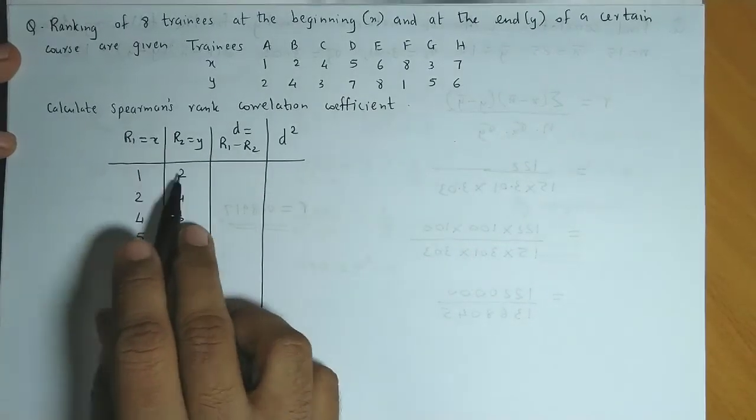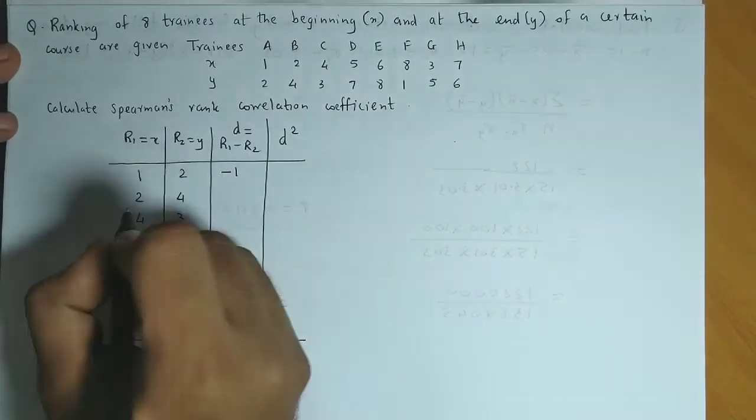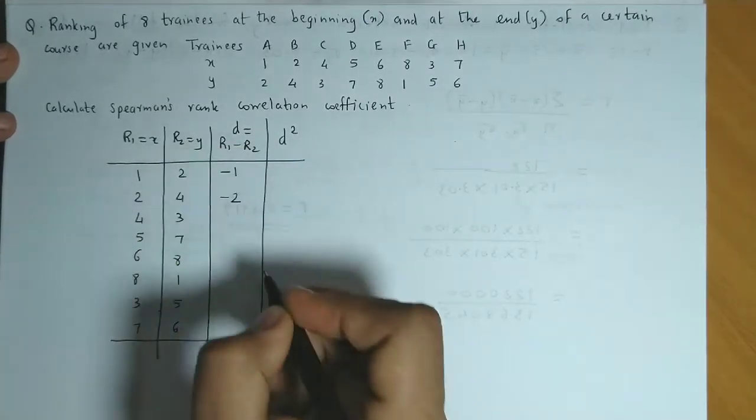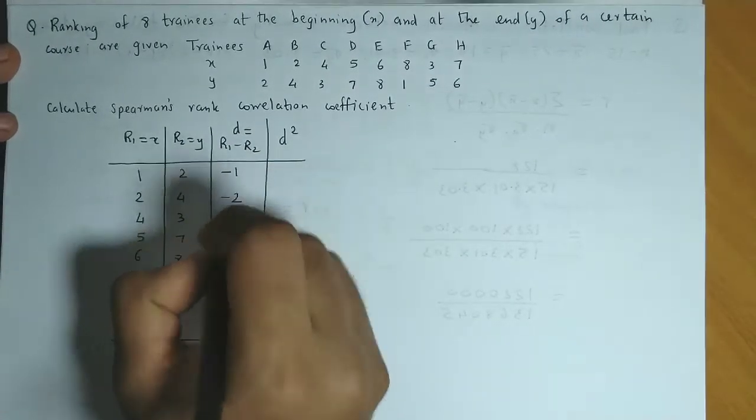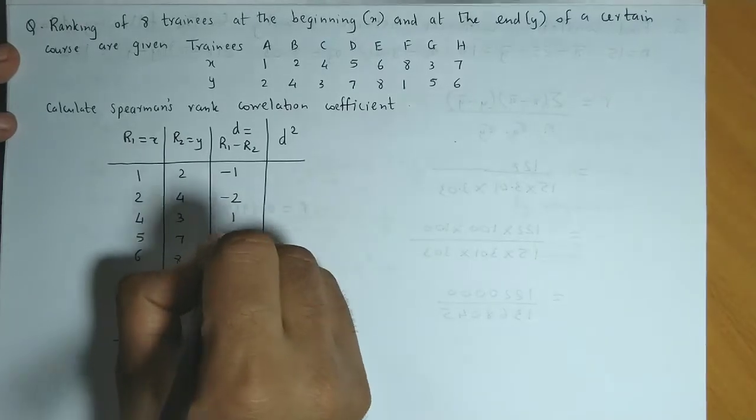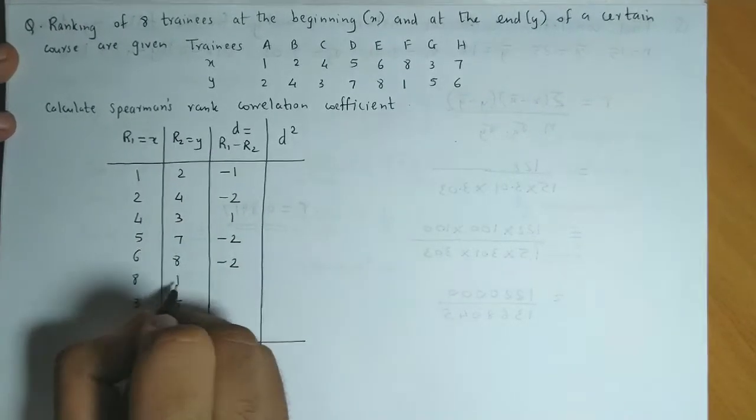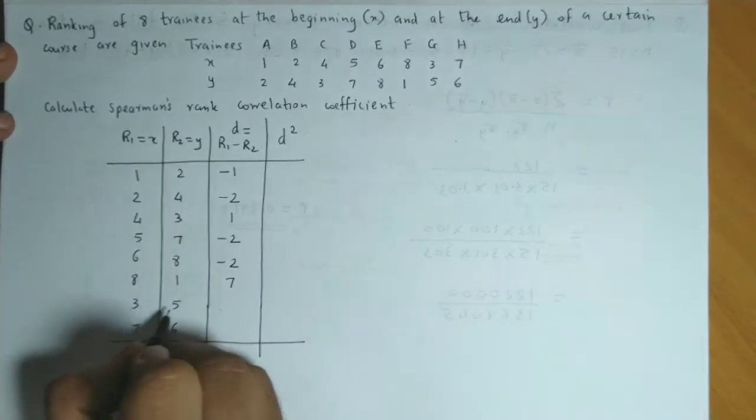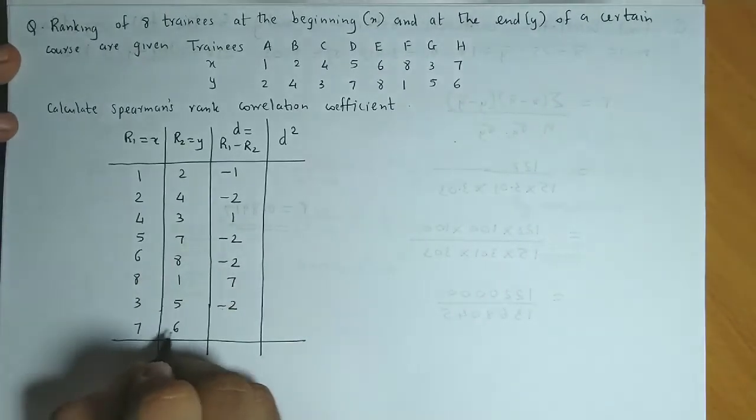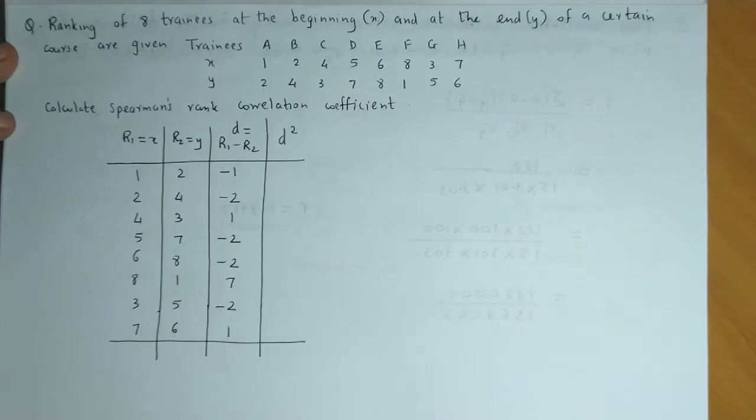Now let us subtract the ranks. So 1 minus 2 is minus 1, here the difference is minus 2, 4 minus 3 is 1, 5 minus 7 is minus 2, 6 minus 8 is minus 2, 8 minus 1 is 7. Here we have minus 2 and here it's 1.